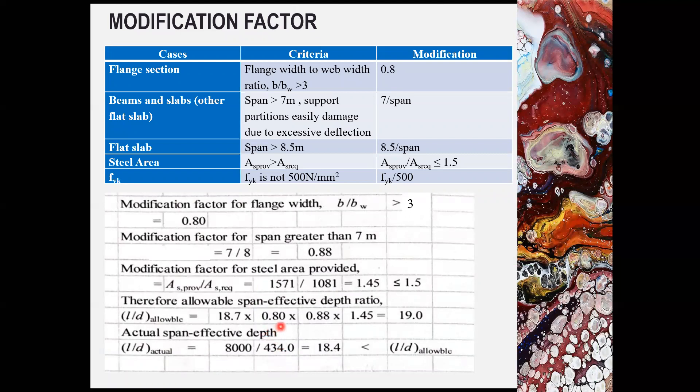So the l over d ratio that you have obtained earlier need to multiply with the modification factor. If you meet these criteria, there are several cases that you need to go through. For example, the flange section, you need to check whether your flange width to web width ratio is greater than 3. If it is greater than 3, you need to use the modification factor of 0.8. If it is not more than 3, you will use 1.0.